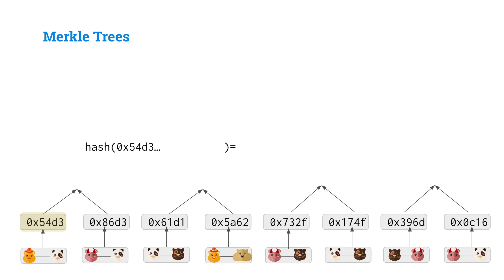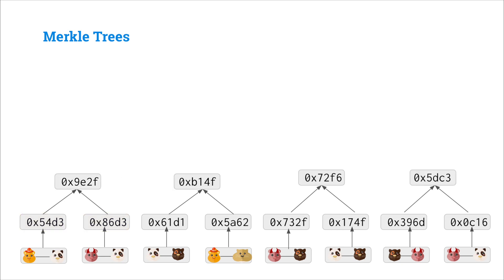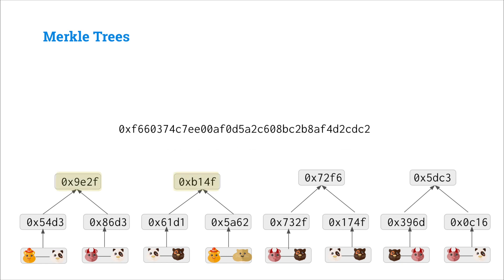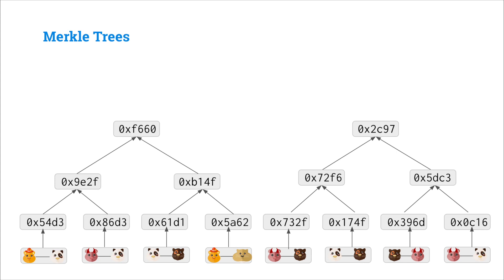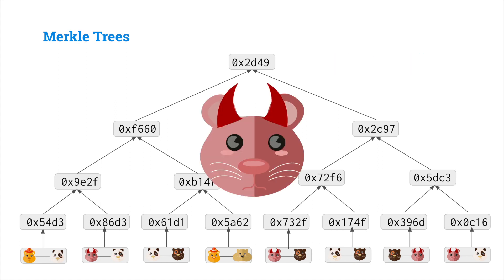So we'll hash 54D3 together with 86D3, and the resulting hash will be the parent of those two hashes. We'll make our way up the tree, hashing each pair of hashes together in order to create a new parent hash. Finally, once we only have two parent hashes, we will hash those two together in order to get our root hash, which is also called a Merkle root.